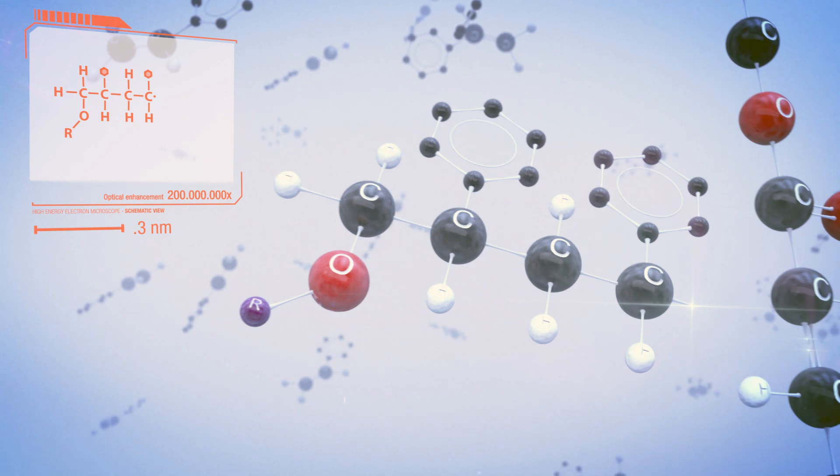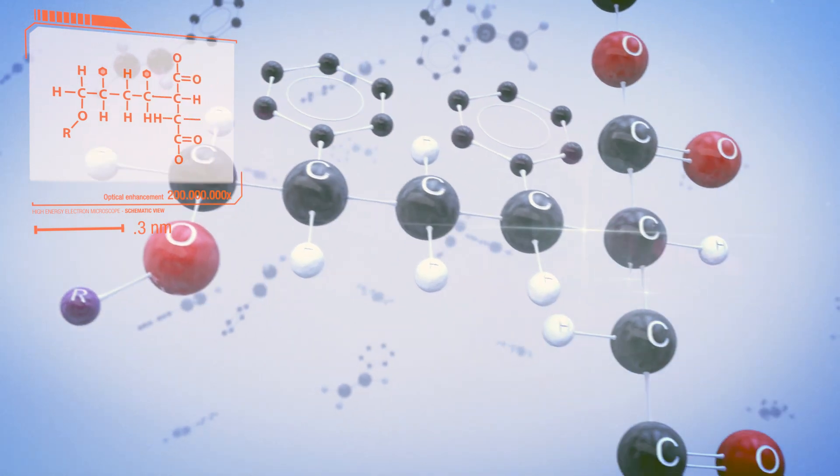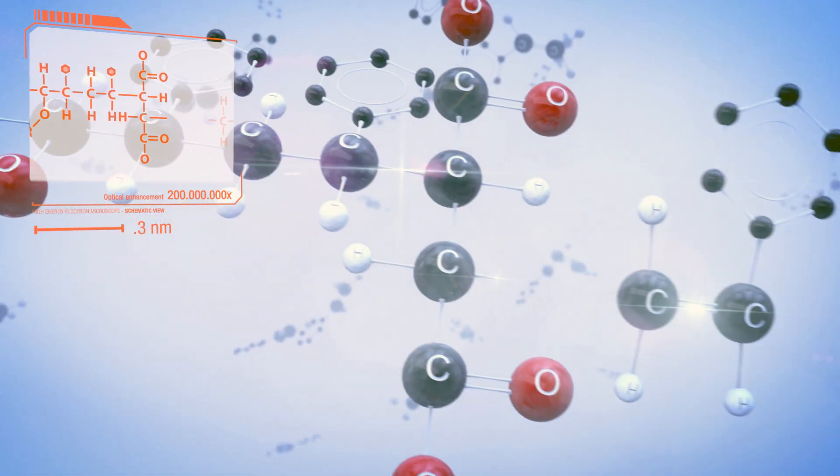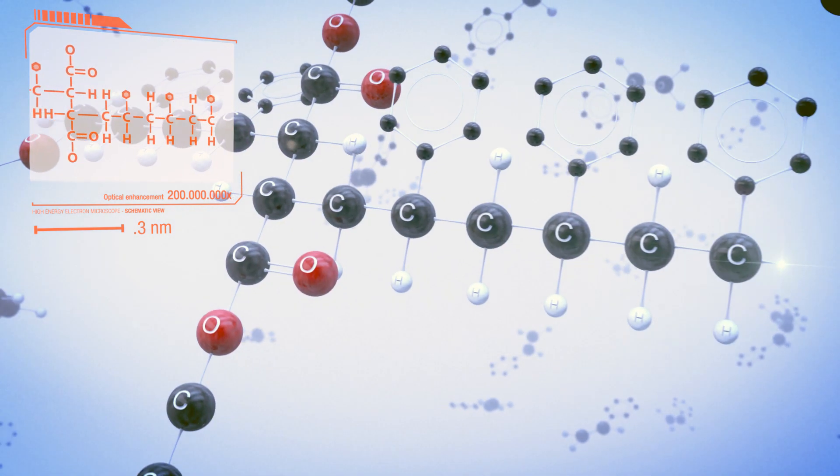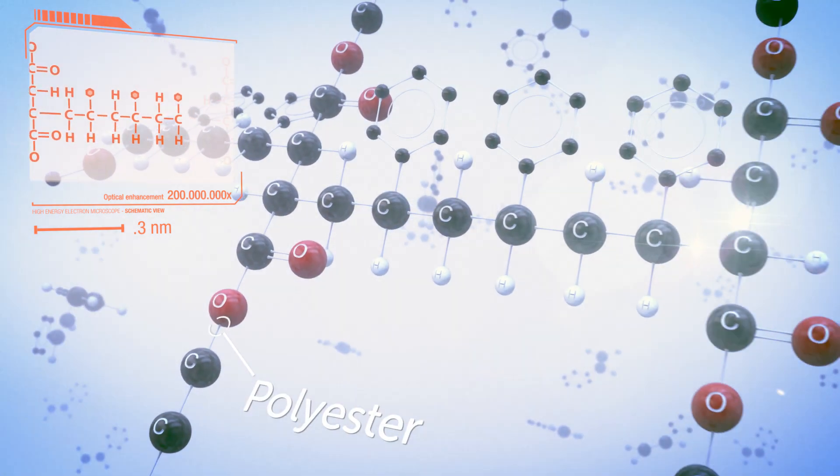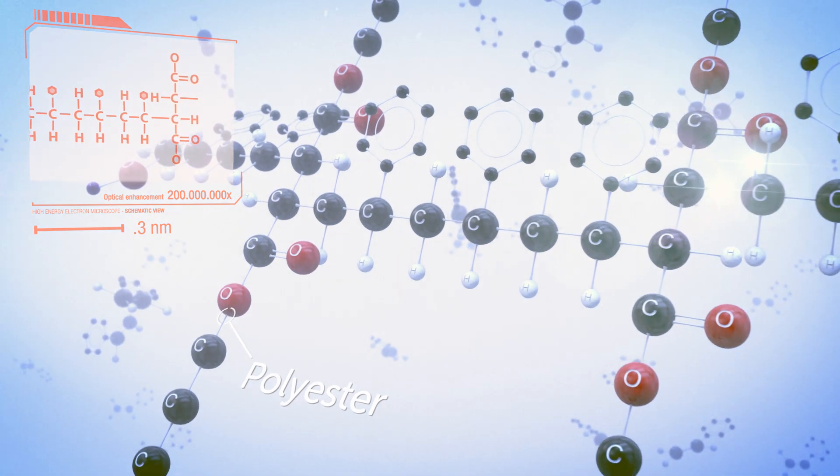The molecules connect and again a new radical is formed, which can open another styrene or polyester chain. This process continues until a radical on one chain meets another radical and they combine.